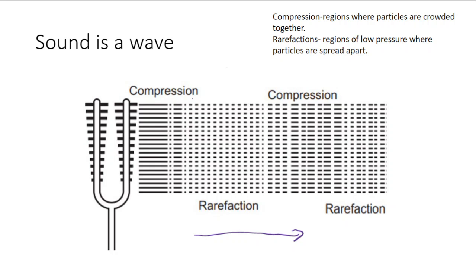The sound wave consists of compression and rarefaction regions. Consider a tuning fork which vibrates and produces sound. In some regions of the sound wave, all the air particles are crowded together — the density and pressure become more — this is compression. In rarefaction regions, the pressure is low and particles are spread apart. Compression has high pressure; rarefaction has low pressure.